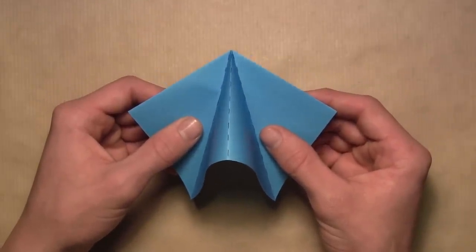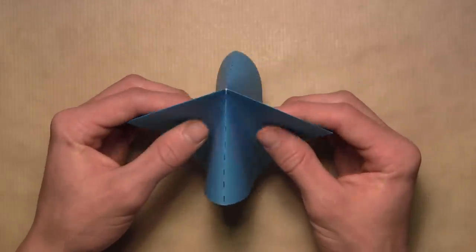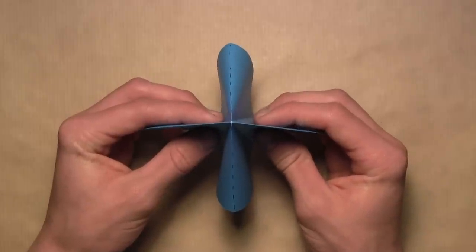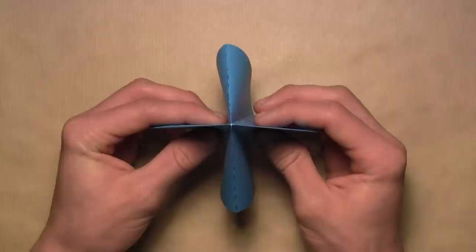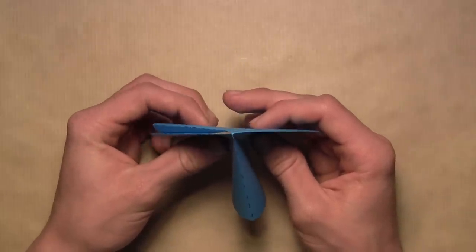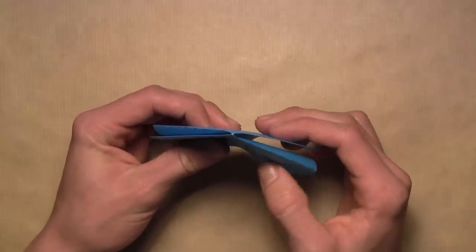And as you're doing this, you'll see that the model will not lie flat, so I find it easier to look at the model from the top. And now you'll see that there's four separate flaps, and what we want to do is simply push two flaps over to the left like that, and then push the other two flaps over to the right.